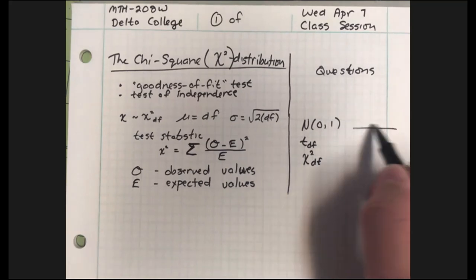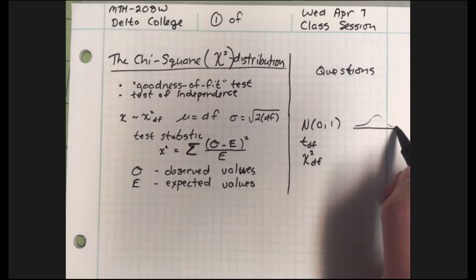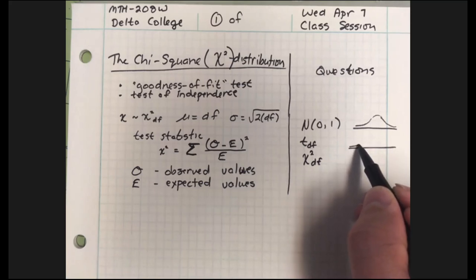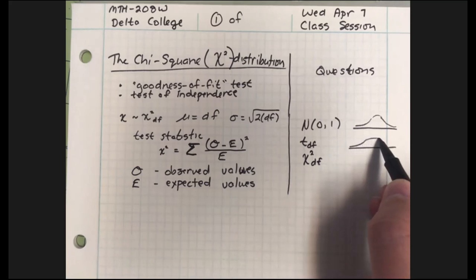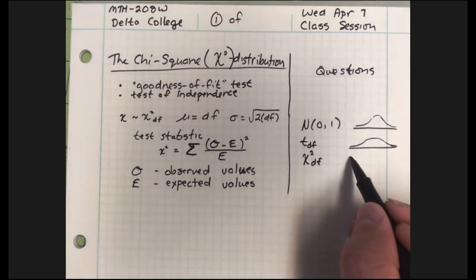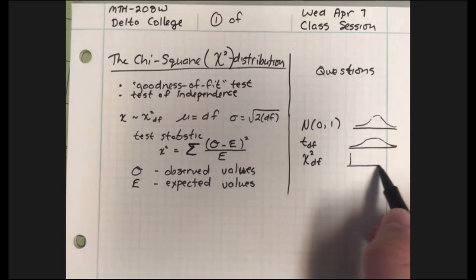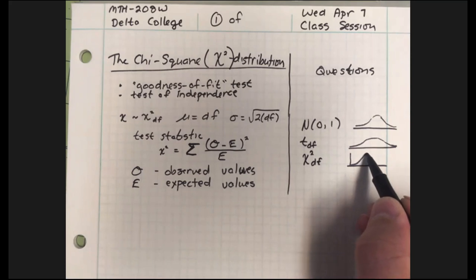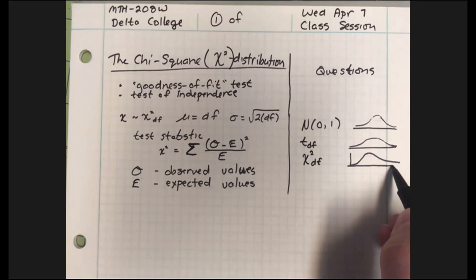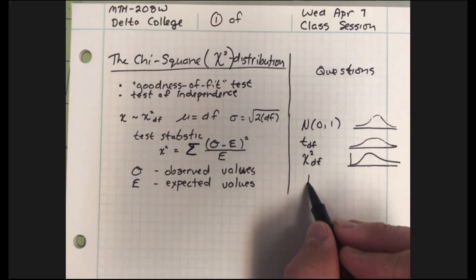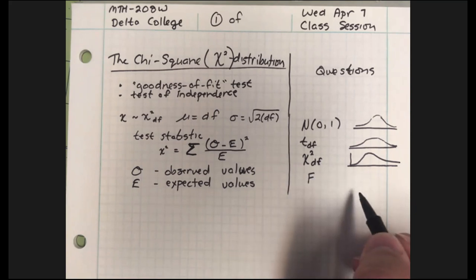The standard normal distribution is a beautiful bell shape. The t-distribution is a kind of wider, flatter bell shape, but still symmetric. The chi-square distribution is the first distribution we've used that is literally not symmetric — it rises to a height early and declines slowly. We've got one more distribution to learn in this class called the f-distribution, but I'll save that for later.